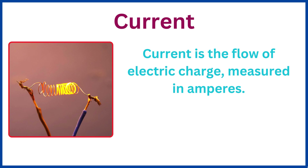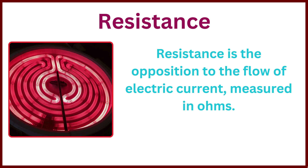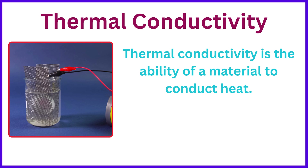Current is the flow of electric charge, measured in amperes. Resistance is the opposition to the flow of electric current, measured in ohms. Thermal conductivity is the ability of a material to conduct heat.